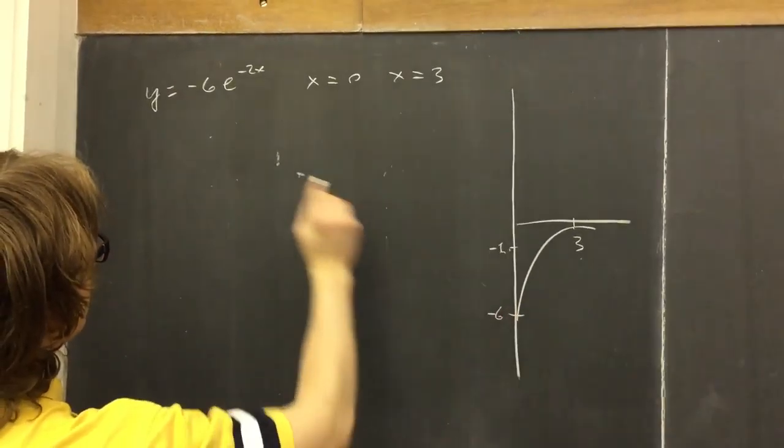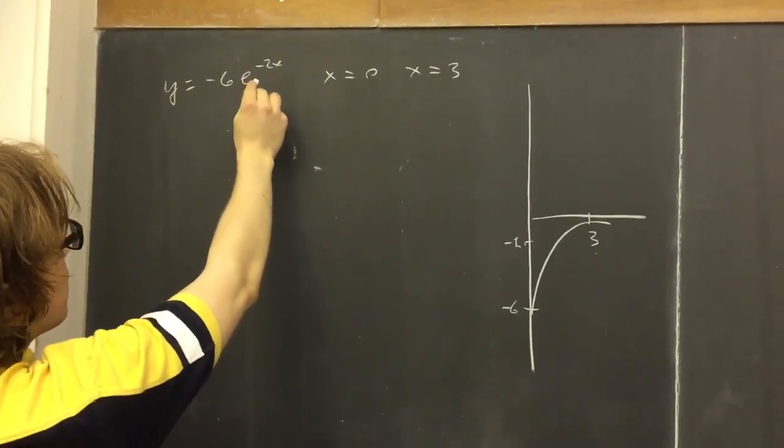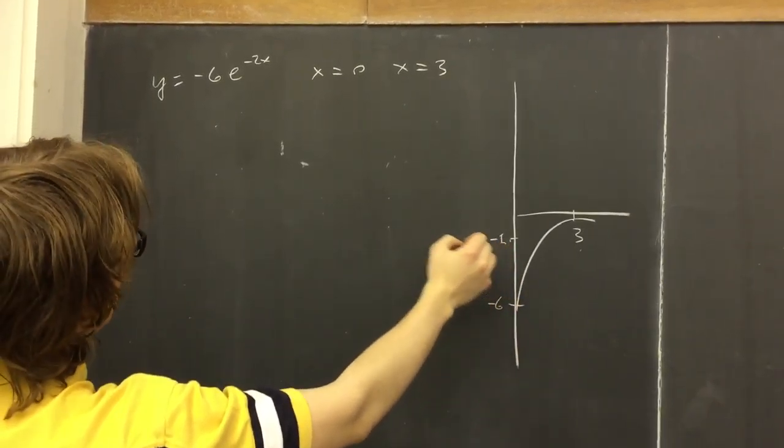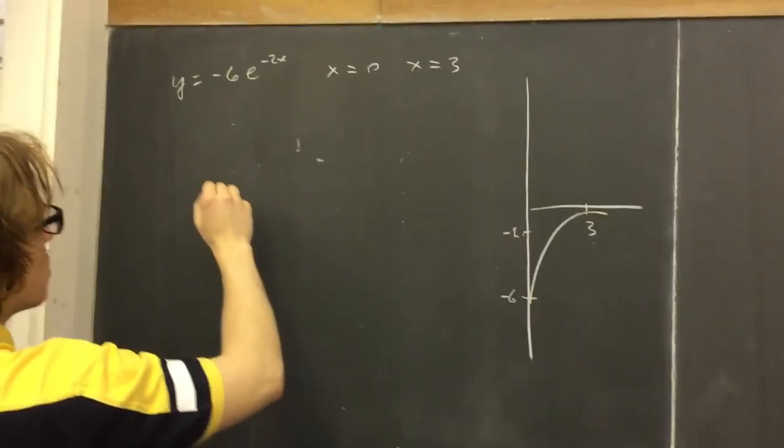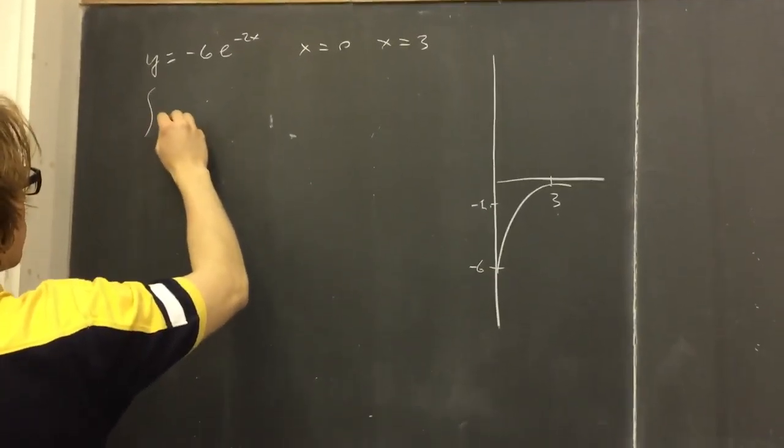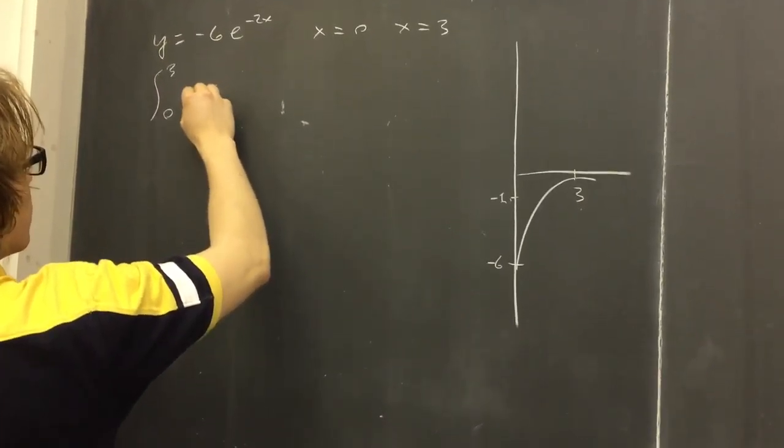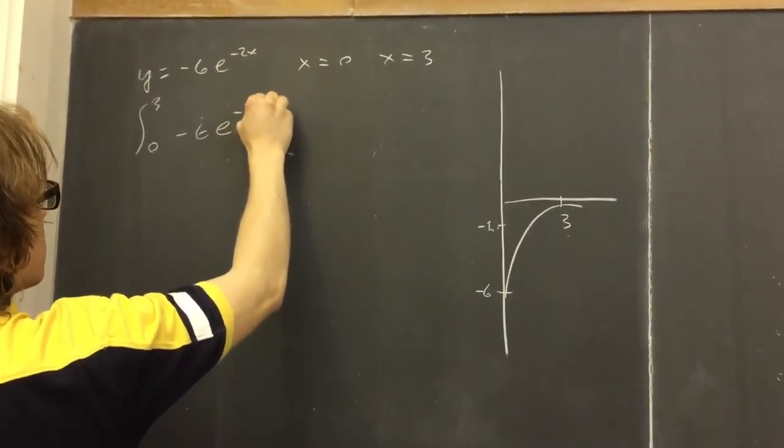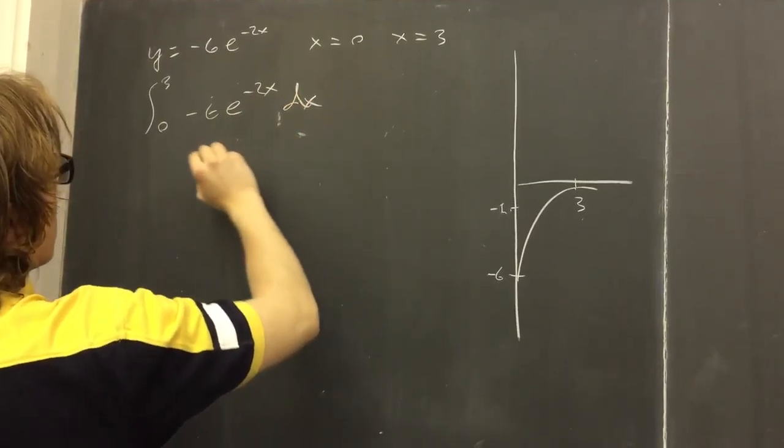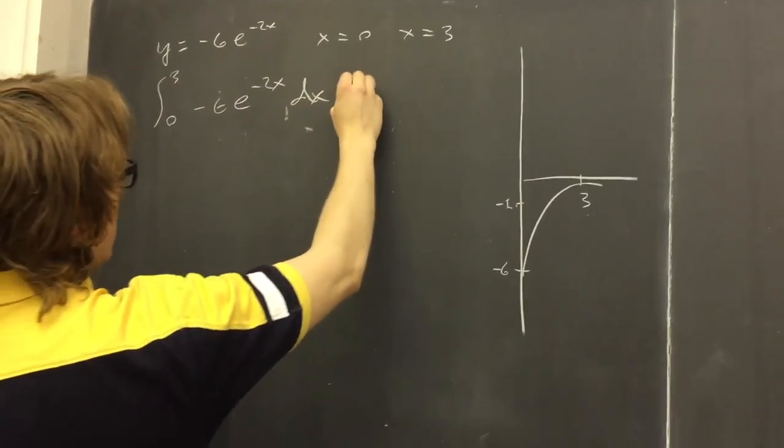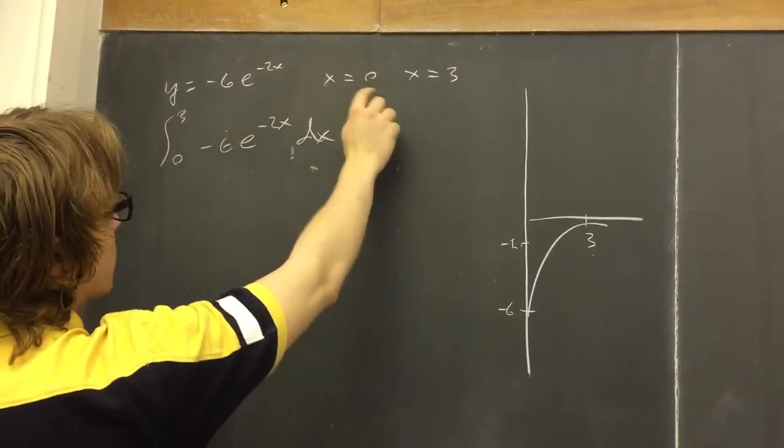We need to find the average value of this function, negative 6e to the minus 2x, over the interval from 0 to 3. So to do that, we will take the integral of this function and divide it by 3, which is our interval.